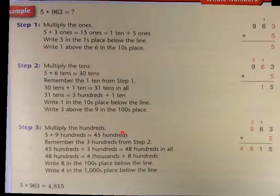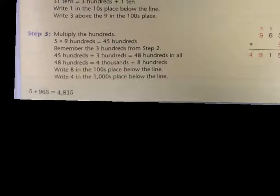And step 3, you multiply the 100's. So we have 900 times 5. Well, I know 9 times 5 is 45, plus 3 is 48. So from that, we know for sure that 5 times 963 is 4,815.